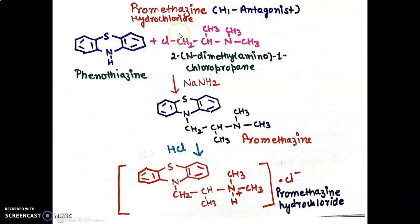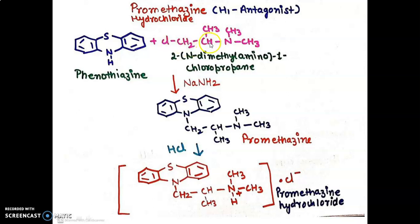The next classical antihistamine is from the phenothiazine class — that is, promethazine hydrochloride. We require knowledge of the structure so that we can separately synthesize the alkyl side chain and the tricyclic heterocyclic nucleus. The starting material phenothiazine is treated with 2-(N,N-dimethylamino)-1-chloropropane, where the N,N-dimethylamino group is substituted on the chloropropane.